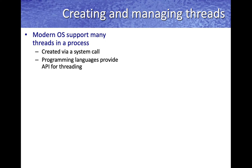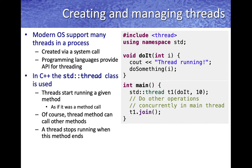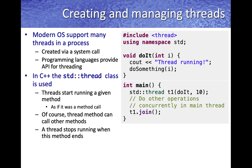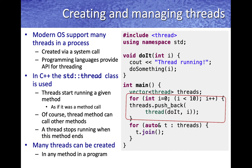Modern operating systems support many threads in a process, typically created via a system call, and programming languages provide different APIs for threading. In C++, the standard thread class is used for starting threads. The std::thread class enables starting threads by calling methods from a different thread — when you create the object, the other thread starts running, and you wait for it to finish by calling the join method. The method called, such as 'doit', can in turn call other methods. Many threads can be created using a for loop to add them to a vector, then waiting for all to finish.